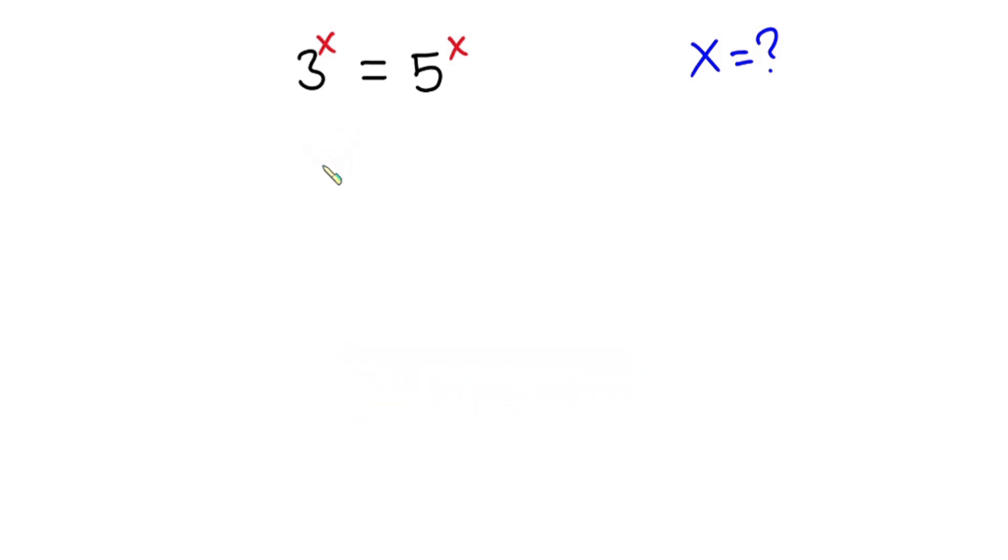Now let's get started. We have 3 to the power x is equal to 5 to the power x. Let's go ahead and divide each side of this equation by 5 to the power x so that this whole thing will cancel.